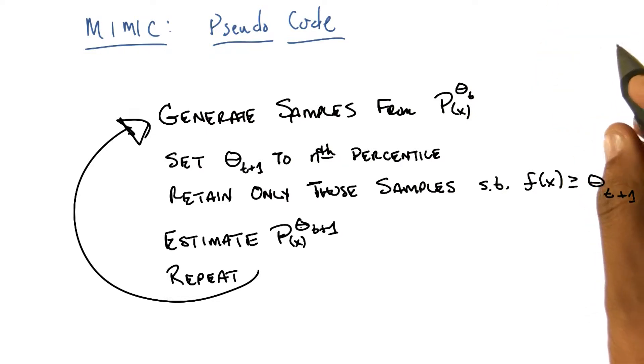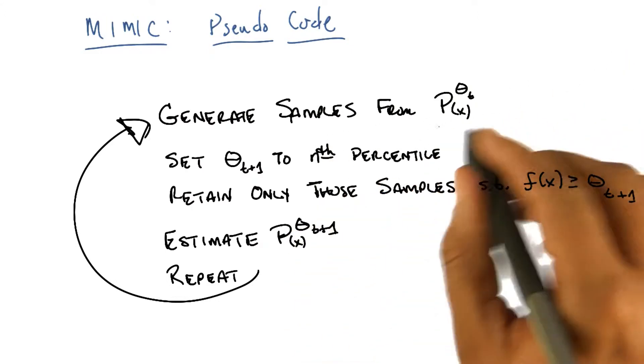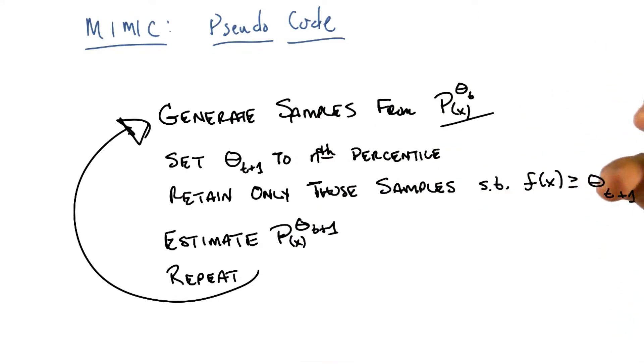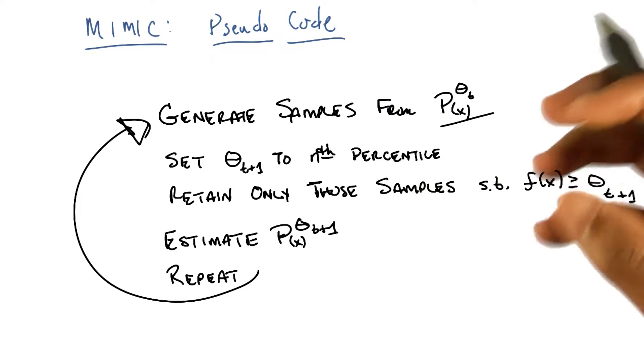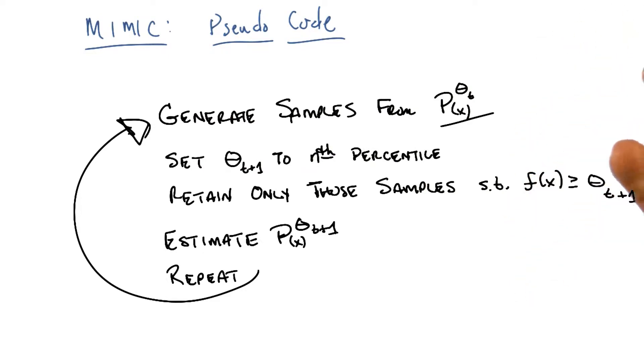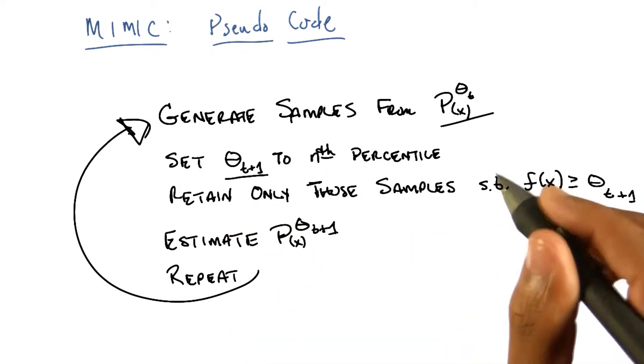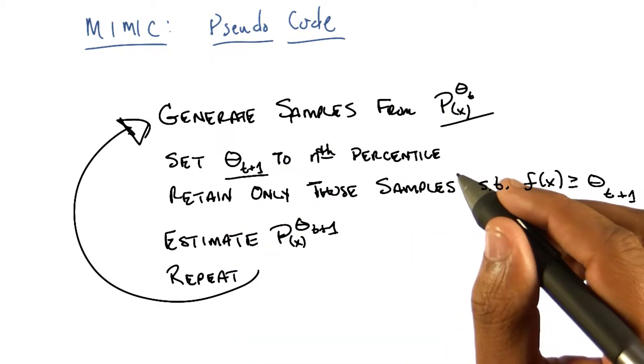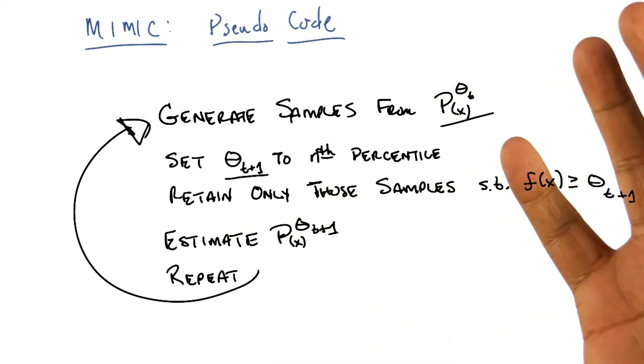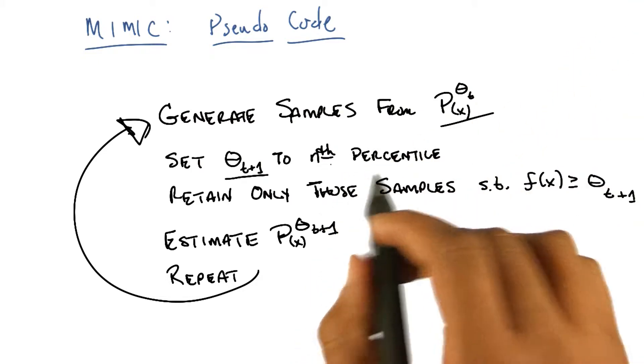And we're simply going to generate samples that are consistent with that distribution. So we're going to treat our probability distribution as something from which we can sample. Generate samples according to p superscript theta sub t. Generate a bunch of those samples. And now that we have these samples, we're going to come up with a new theta t+1. And that theta t+1 is going to be the best samples that we just generated. So let's say the top half.